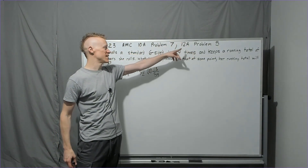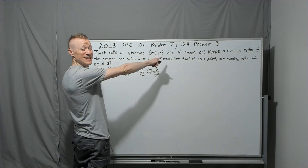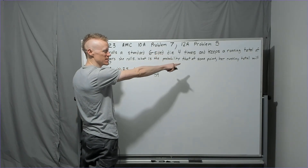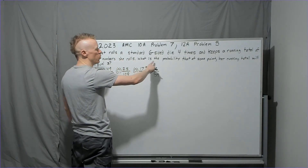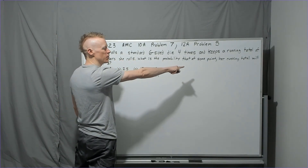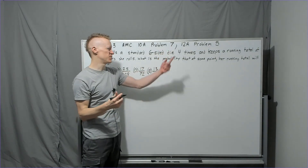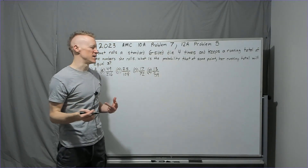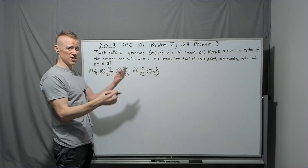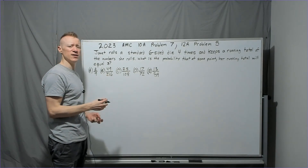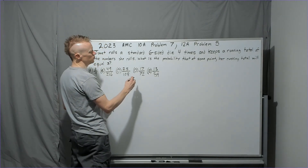Problem seven on the 2023 10A is also the last problem of the rapid fire set, and it's 12A problem five. Janet rolls a six-sided die four times and keeps a running total. What is the probability that at some point her running total equals three? Since she's rolling four times, she'll definitely exceed three, so the four-roll detail is essentially extraneous.